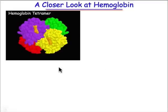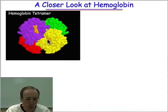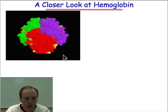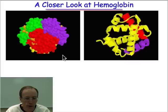Here's a structure of hemoglobin. Hemoglobin actually has four different chain molecules, and you can see the four different porphyrins — actually two of them are visible here. Spinning it around, we can get another view and see some of the other chains as well.